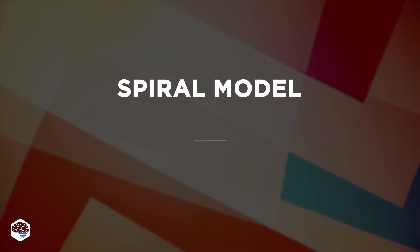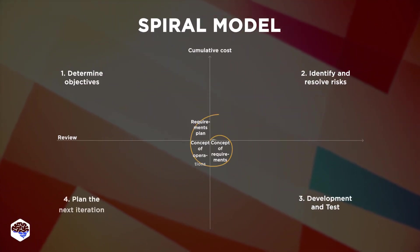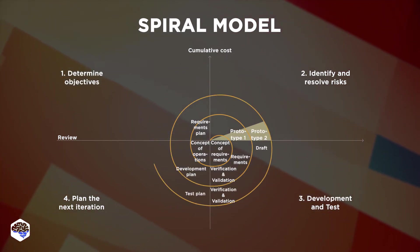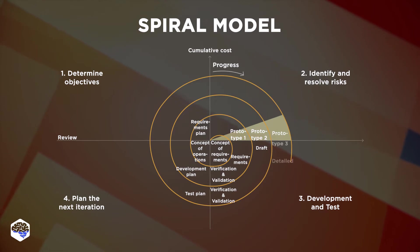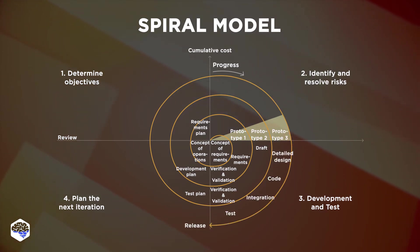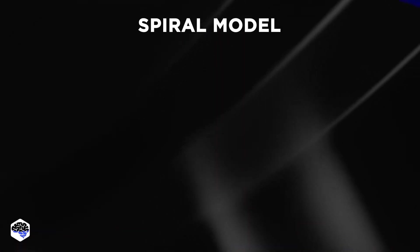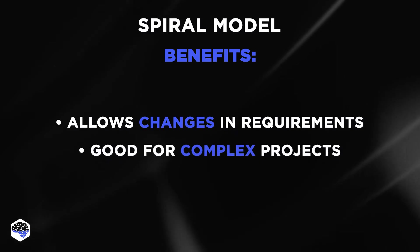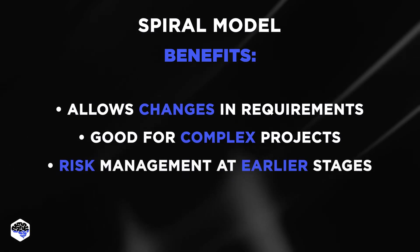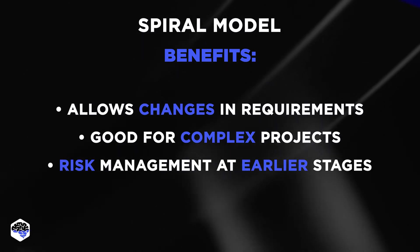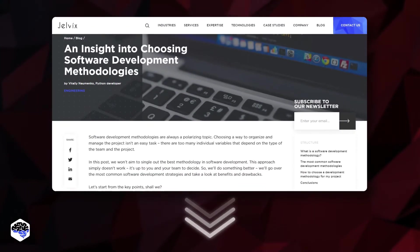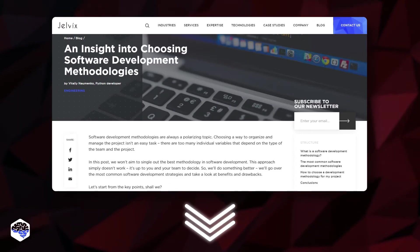And finally, the Spiral Model. This methodology focuses on risk analysis and development loops, combining both linear and iterative approaches. Each spiral addresses one single activity of software development. The Spiral Model has the following benefits: it allows changes in requirements, it's good for complex projects, and provides the ability to manage risks at earlier stages. Would you like to learn more about software development methodologies? Check our guide in the description box.